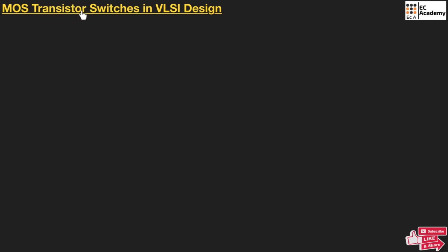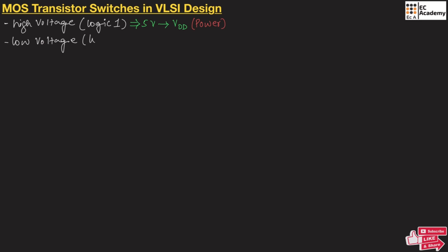Before understanding how MOS transistors act as a switch, we will understand a few concepts. In digital circuits, high voltage — which is usually logic 1 — is 5 volts, referred to as VDD or power. A low voltage is usually logic 0, which is 0 volts, represented as VSS, referred to as ground.